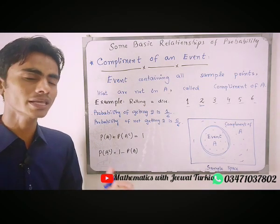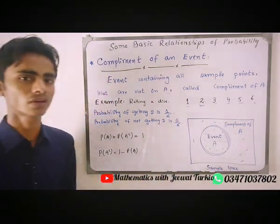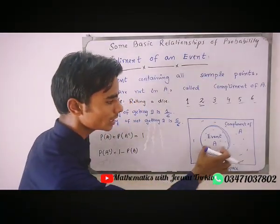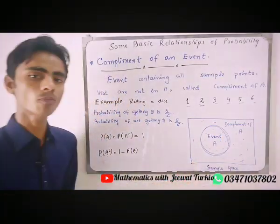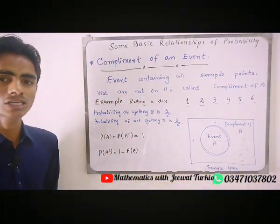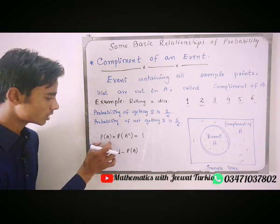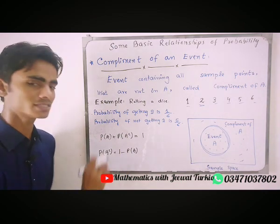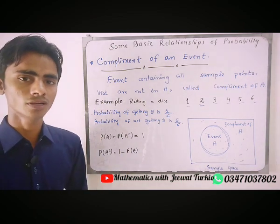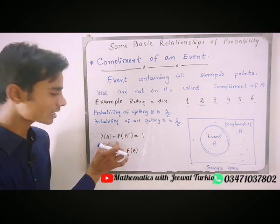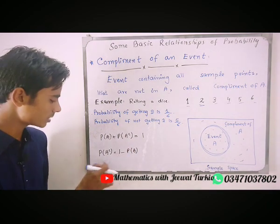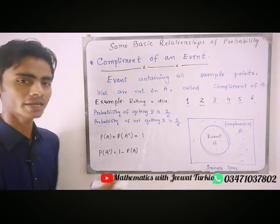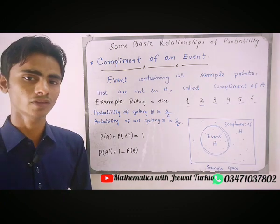The probability of event A plus the probability of A complement is equal to 1. We can rewrite this equation as: probability of A complement is equal to 1 minus probability of A.